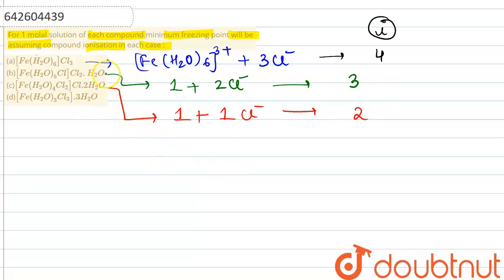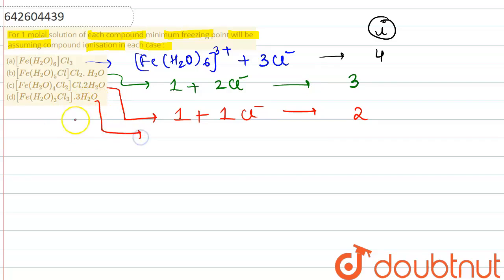For the last complex, there is no chloride ion outside the coordination sphere. Only the main coordination sphere ion itself is present, so the van't Hoff factor i = 1. To summarize: i values are 4, 3, 2, and 1 for the four complexes respectively.